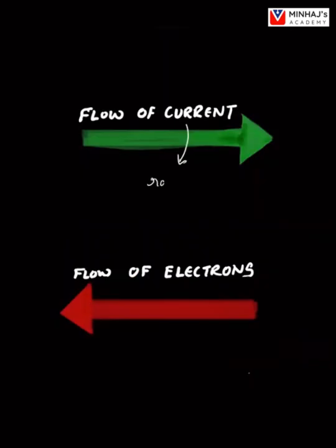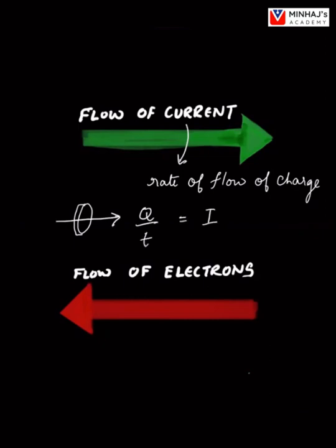What is current? Current is the rate of flow of charge. What does that mean? If we take a cross-section of a wire and a charge Q flows through it in time t, then this is defined as current.